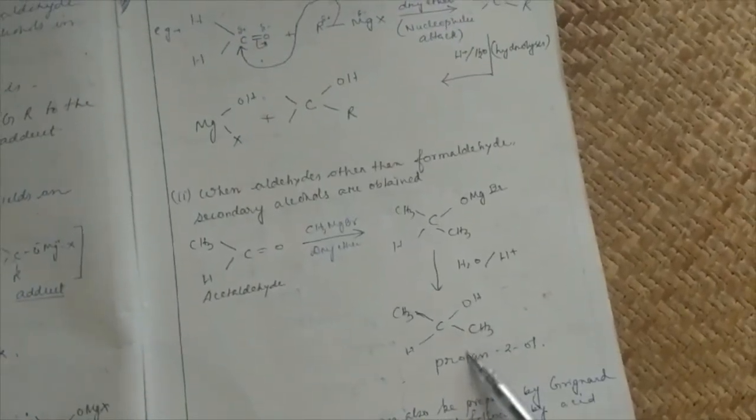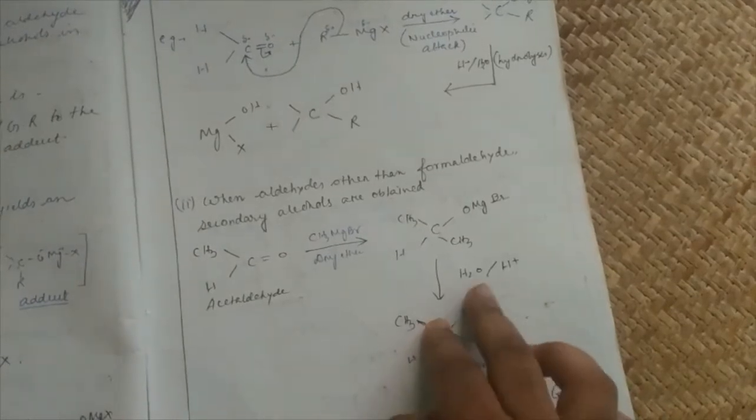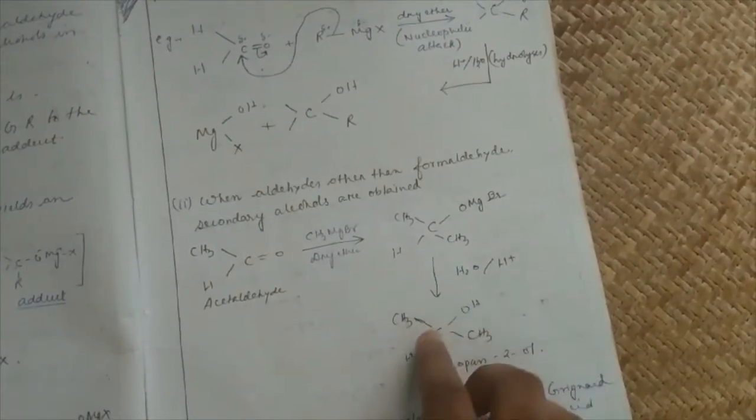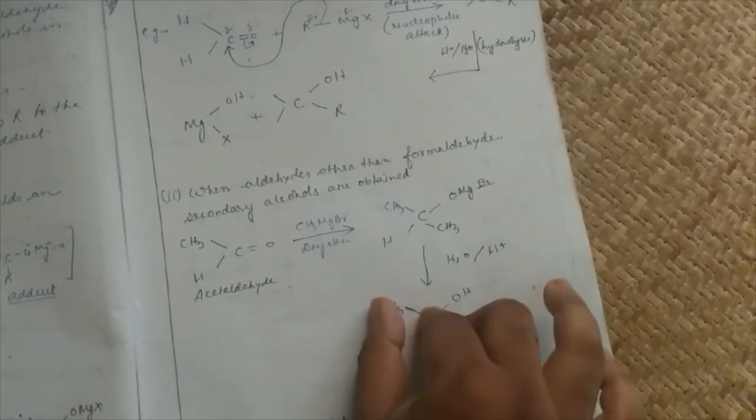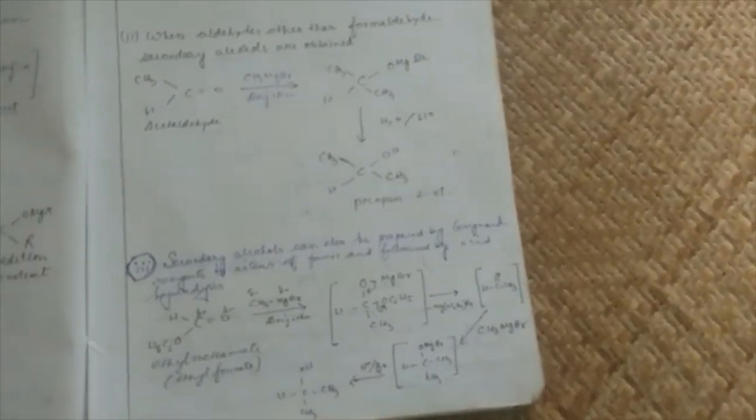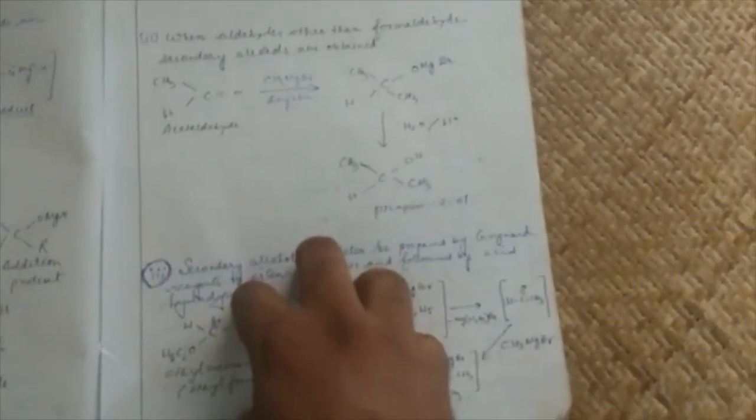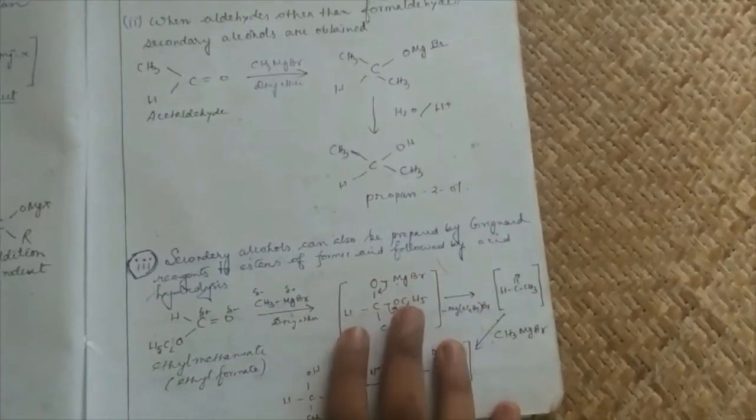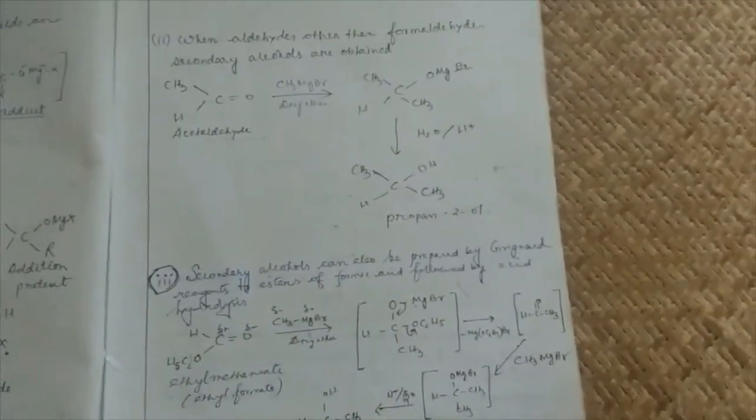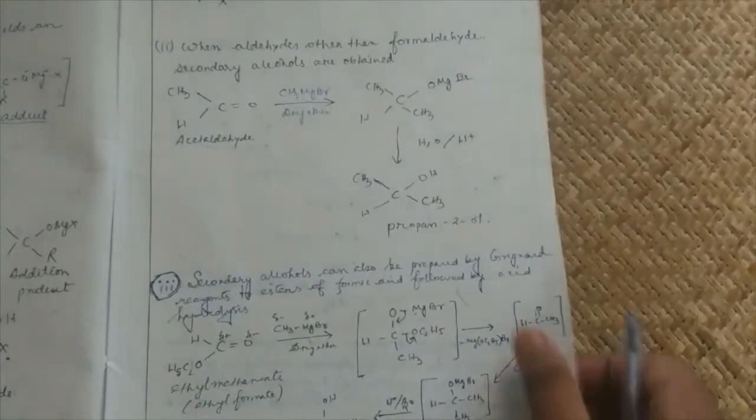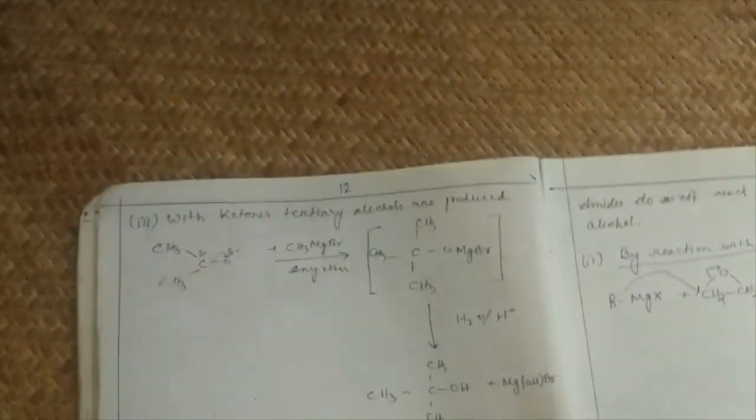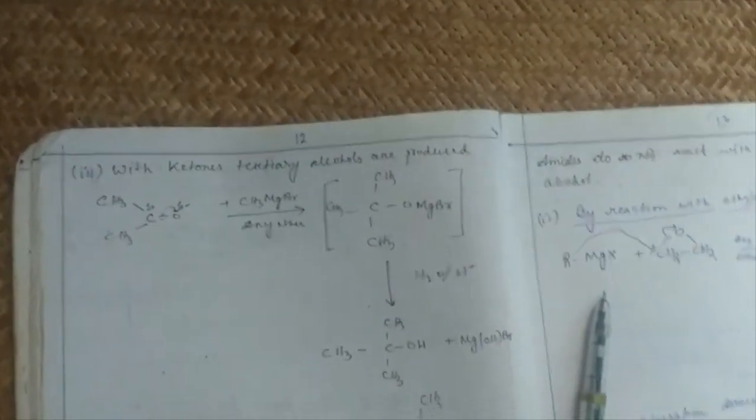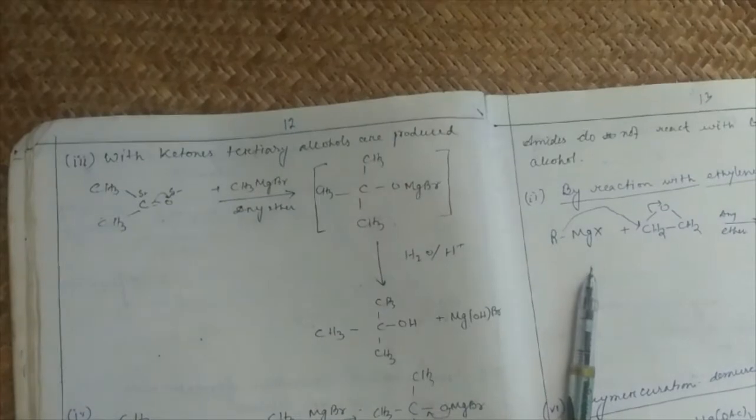If aldehydes except formaldehyde give secondary alcohol, what is secondary alcohol? Secondary alcohol means OH group is attached to a carbon which is functional group, and that carbon is attached to two other carbons, so it is secondary. With ketones, tertiary alcohol.